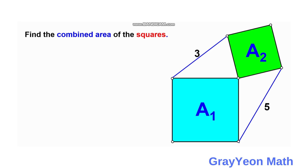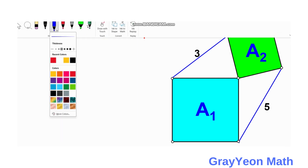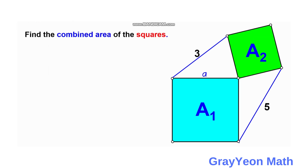The first thing we need to do is label the sides of the squares. For the first square (A1), we label all its sides as A. For the green square, we label all its sides as B.